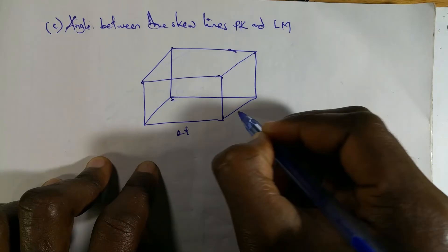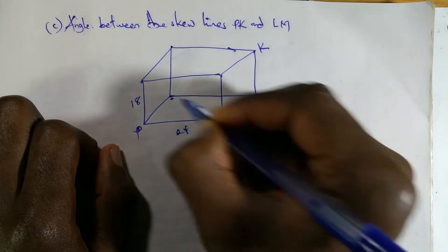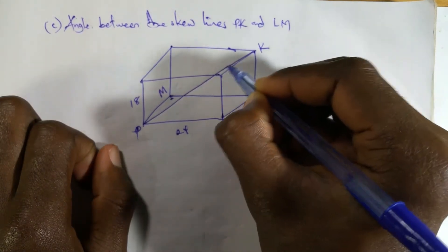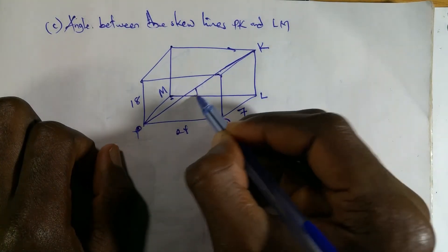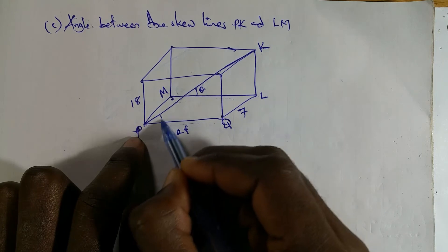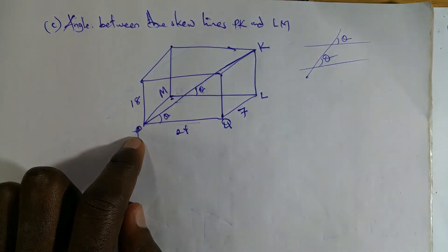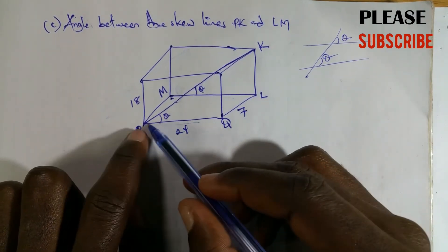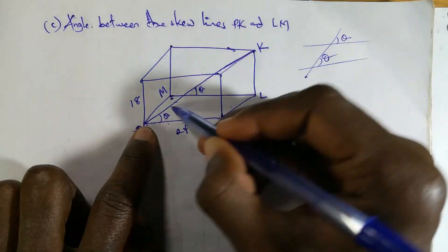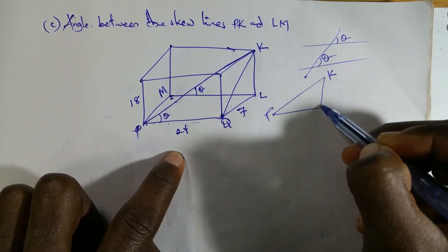Redrawing the cuboid with dimensions 24, 7, and 18 cm, we locate P, K, and LM. PK is drawn joining those two points. Since LM is parallel to PQ, the angle between skew lines PK and LM equals the angle between PK and PQ. We can join point Q to K to form a helpful triangle, working in the plane QLKR.